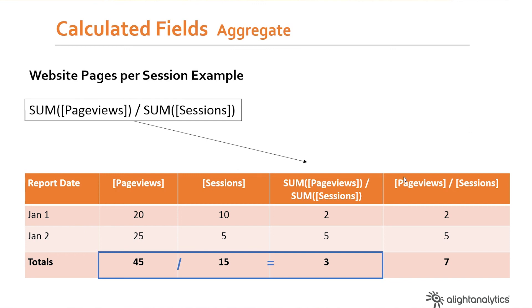You can see that the difference is pretty broad — from three to seven. So be sure to use, for this particular example, an aggregated calculation when performing average page views per session. Be sure to check out our other videos on YouTube, and thanks for watching.